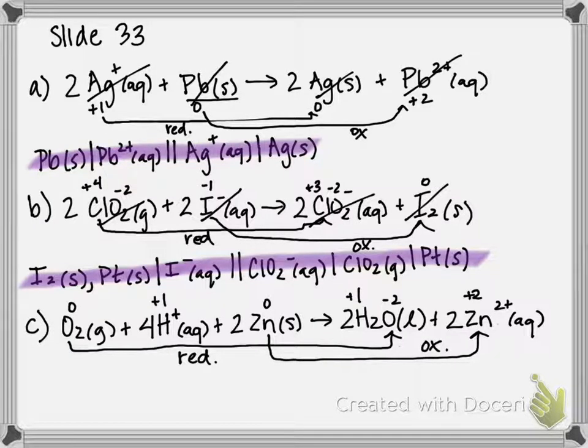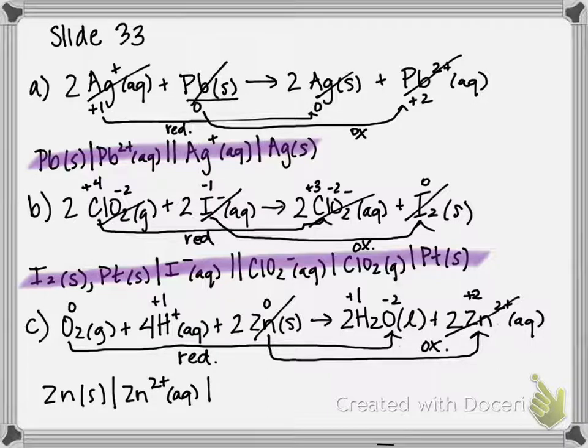So that means I'm going to start with zinc. I have solid zinc. Zinc is a metal. It can conduct electricity. So therefore, that's my electrode. My electrolyte is my zinc 2 plus in the aqueous phase. And that's the only components of that half reaction. So I'm done with that. I'm going to draw my two lines to separate my salt bridge.